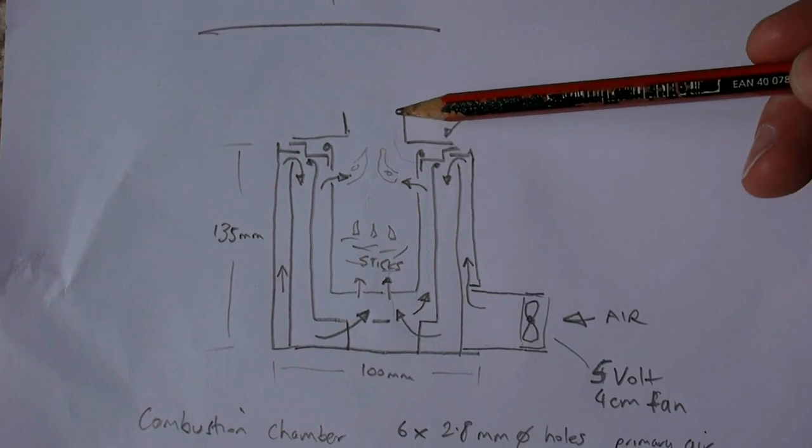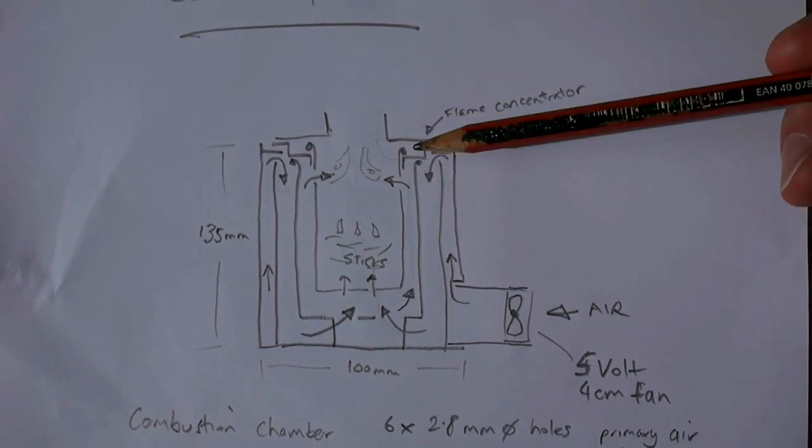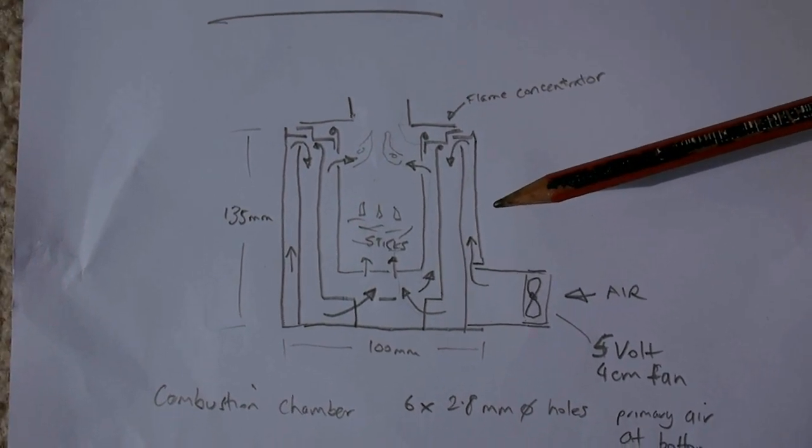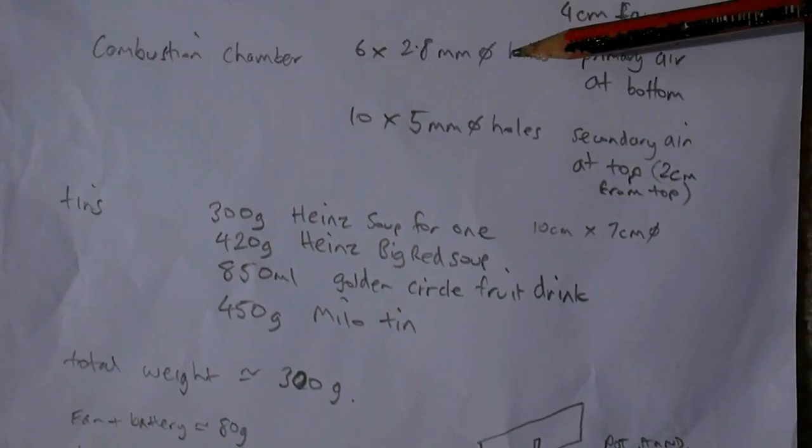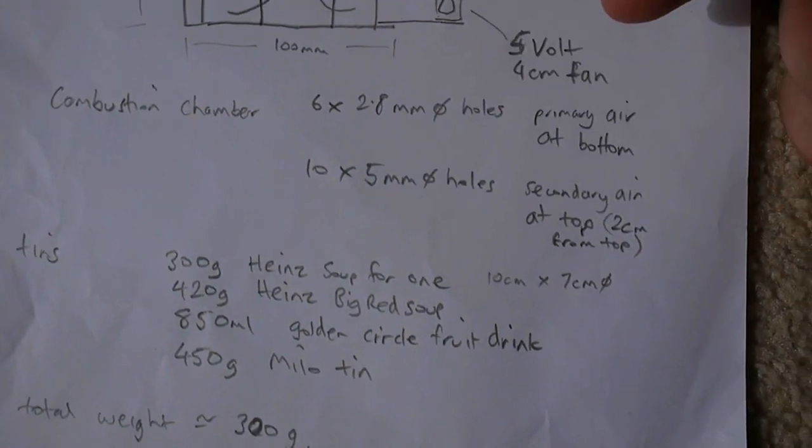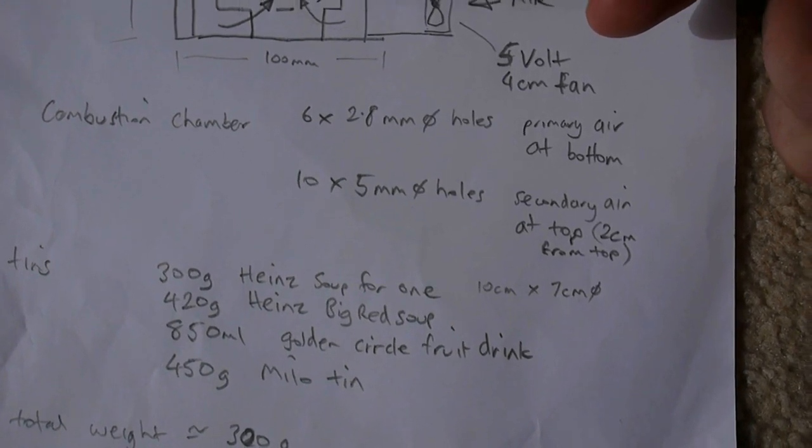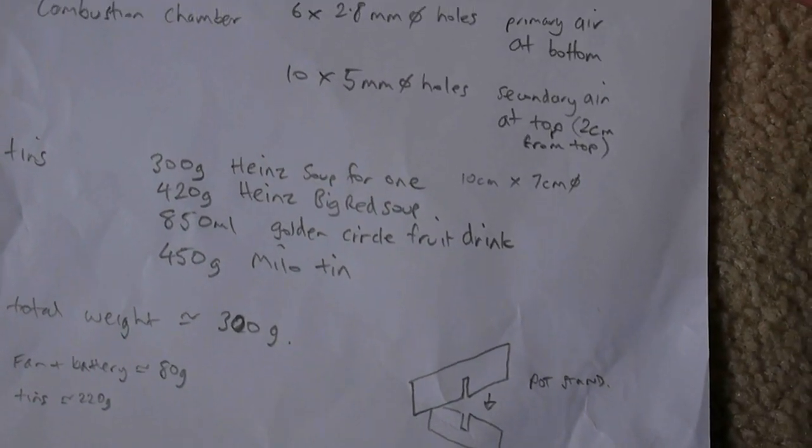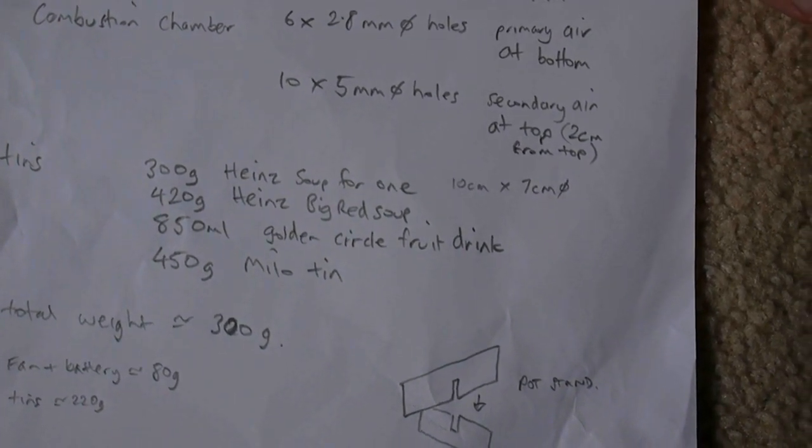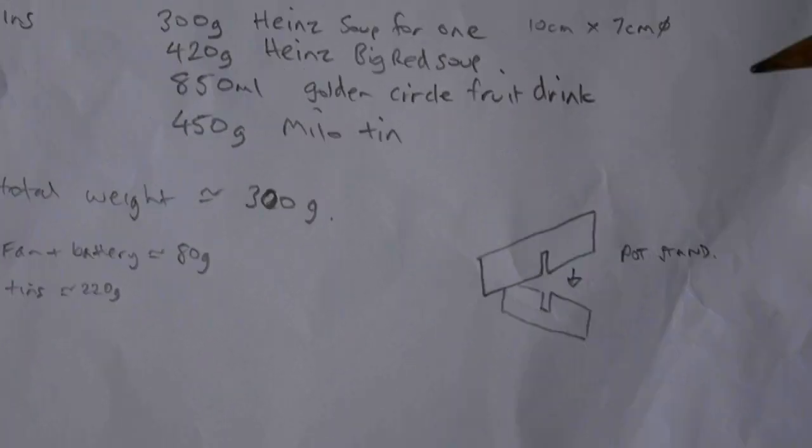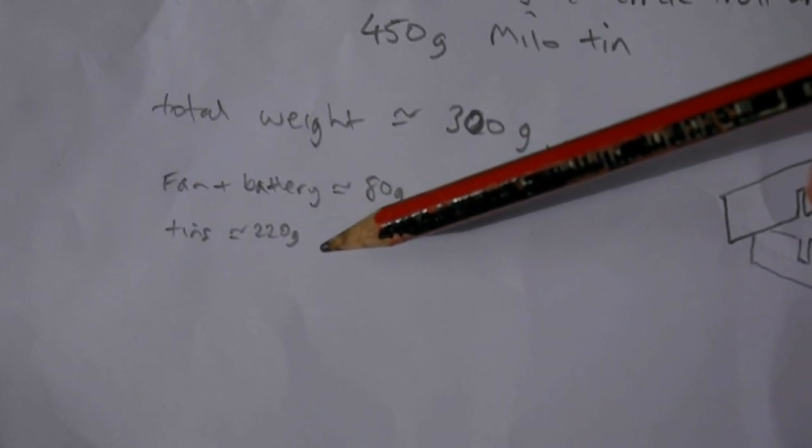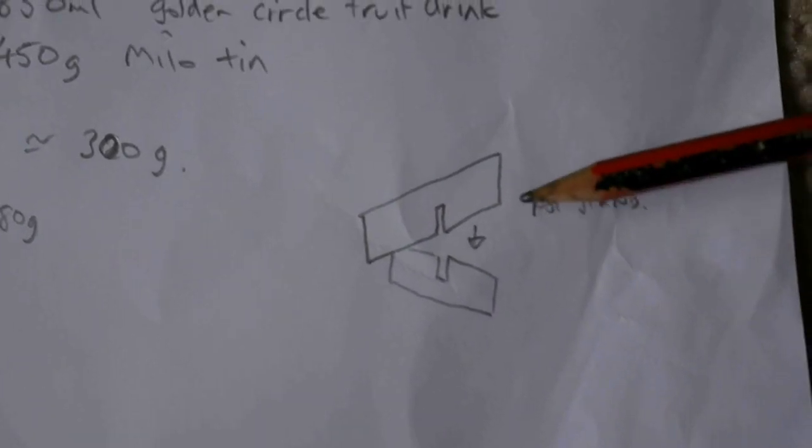What else we got? Some of the details in here just going over. So we've got six 2.8mm holes at the bottom where the primary air comes in. We've got ten 5mm holes here—they're two centimeters down from the top edge. These are the tins that I used. The total weight is about 300 grams, of which 80 grams is the fan and battery, about 220 grams is the tin. This is how I made my pot stand—just two pieces of metal steel that slot together.